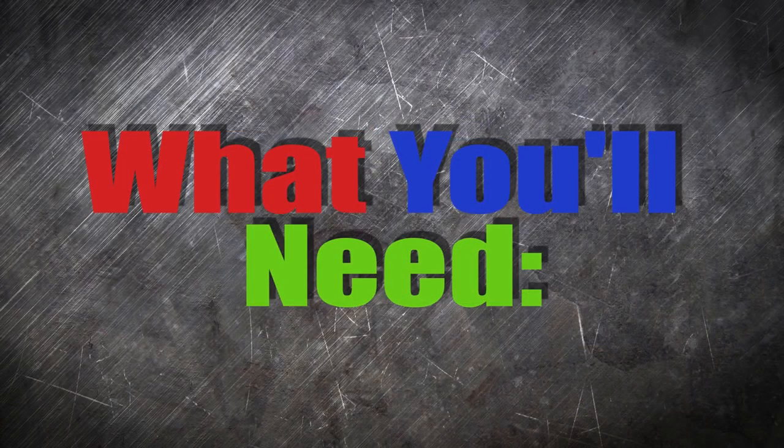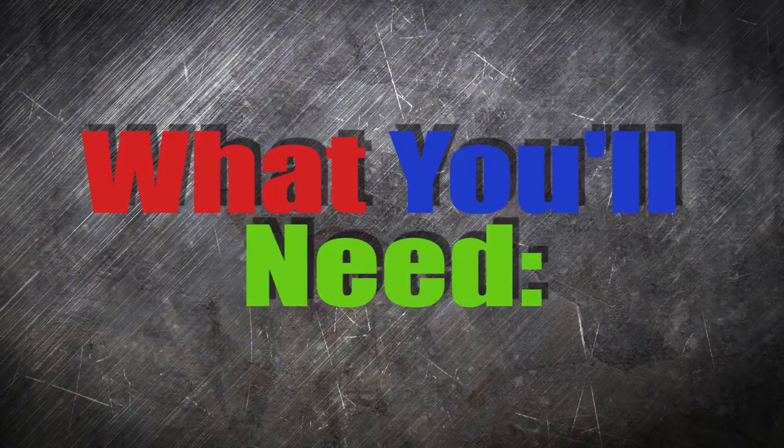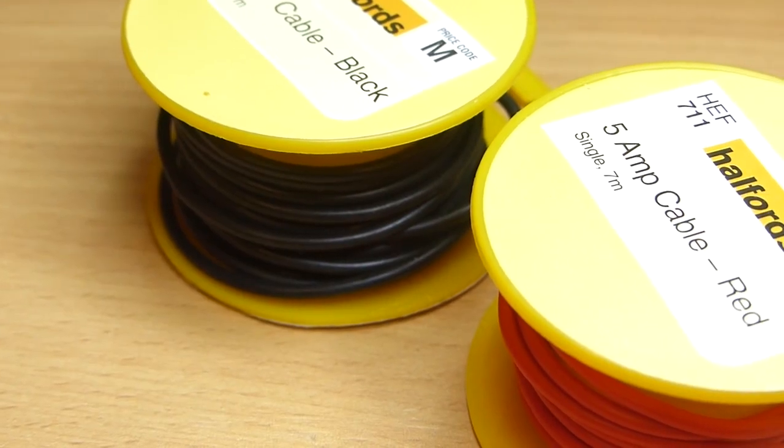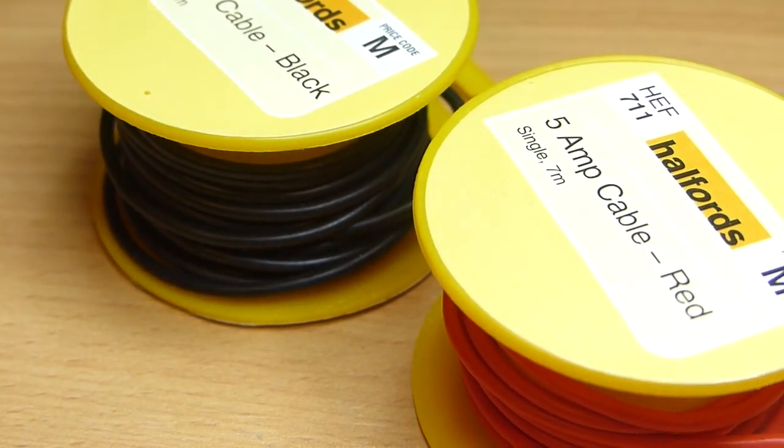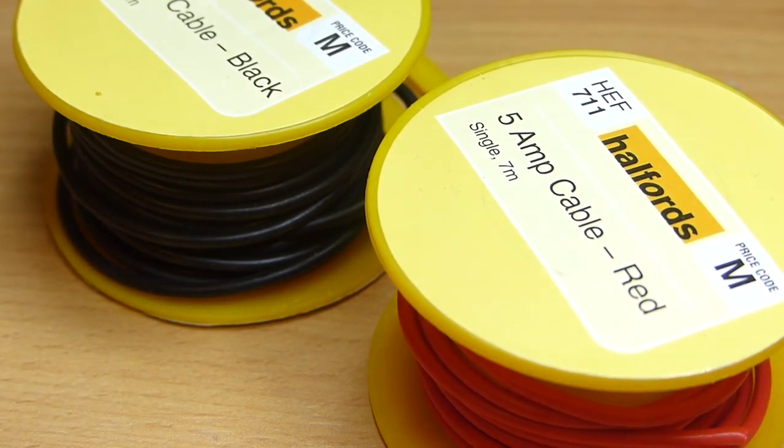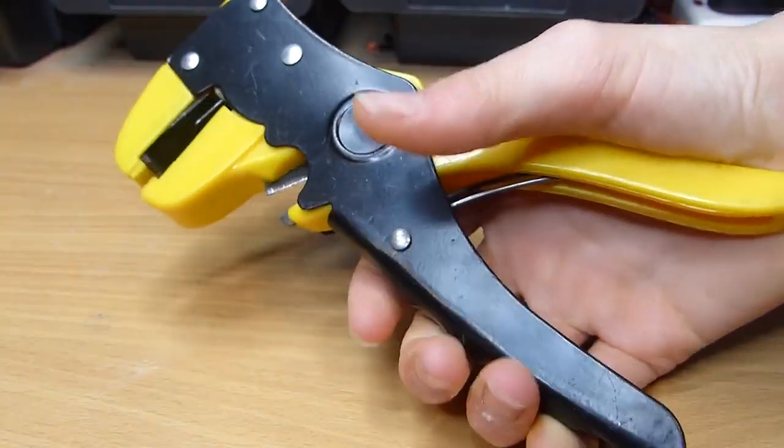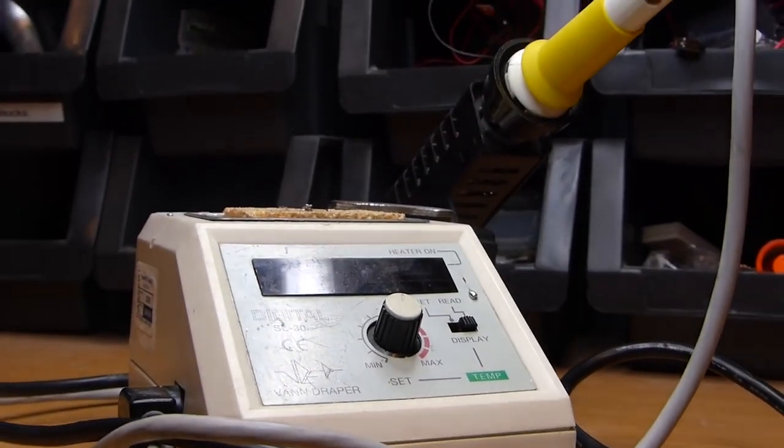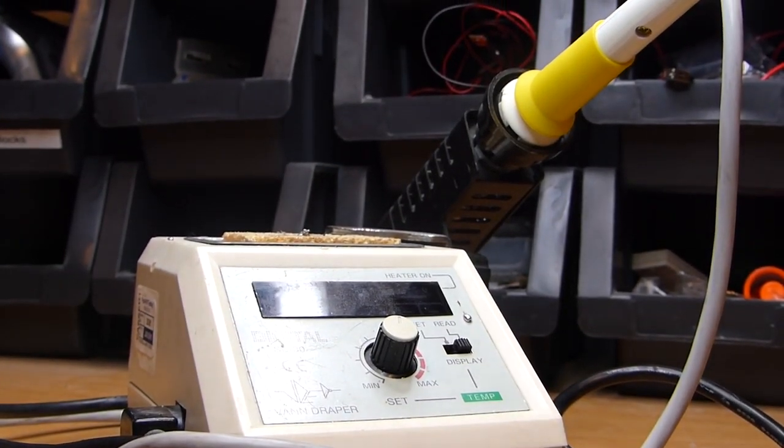Before we start soldering, let's see what you'll need along with the micro-switch. You will need some wire. I am using red and black 5 amp wire, but you should use whatever suits your current needs. You will also need solder, wire strippers, and a soldering iron. I use a nice temperature control station, but a basic plug-in iron will work just as well.